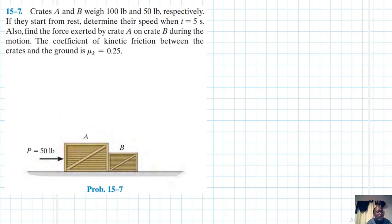Welcome. Crates A and B weigh 100 pounds and 50 pounds respectively. If they start from rest, determine their speed when t equals 5 seconds. Also find the force exerted by crate A on B during the motion. The coefficient of kinetic friction between the crates and the ground, mu_k, is equal to 0.2. This problem comes from Engineering Mechanics and Dynamics, 14th edition by Hibbeler.